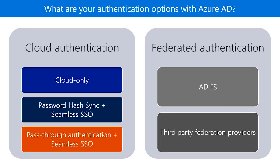Pass-through authentication is the third option. It is very similar to password hash sync, but it's for organizations where their security policies are something that they would like to reuse in the cloud. The next two options are federated authentication. It can be either using Microsoft's ADFS or third-party compatible federation providers. In this case, Azure AD actually hands off the authentication to a trusted authentication system to handle all the authentication.